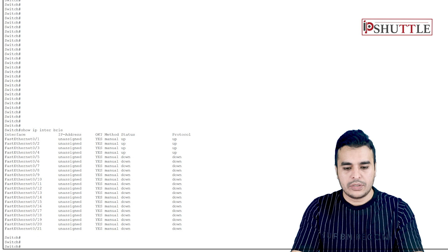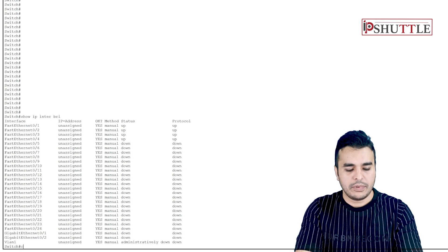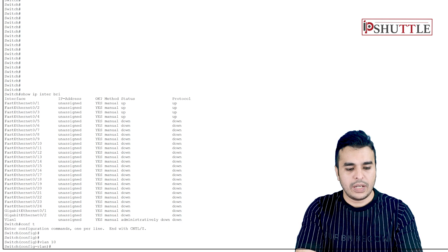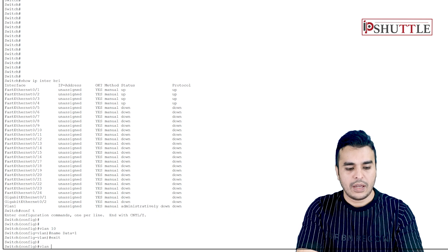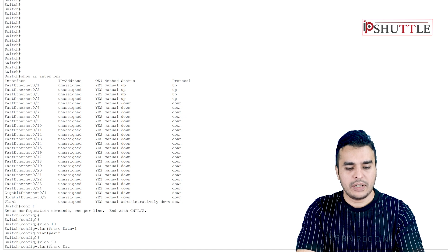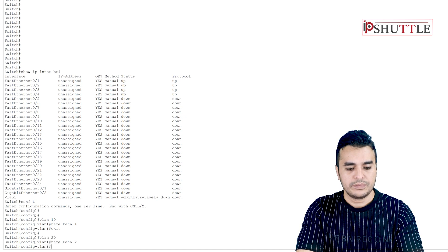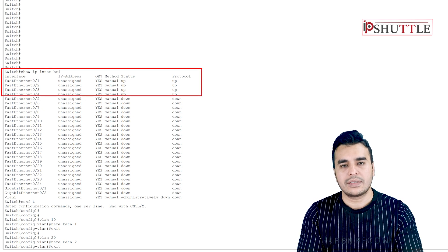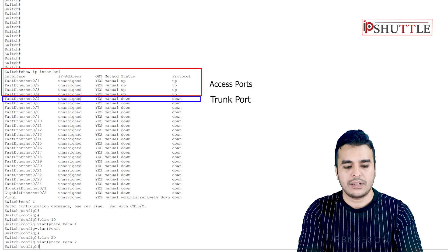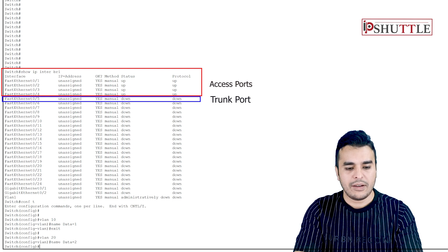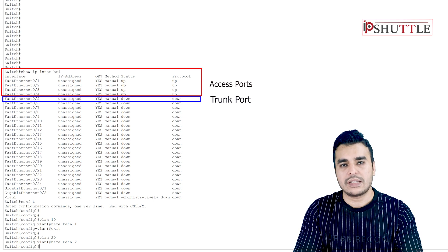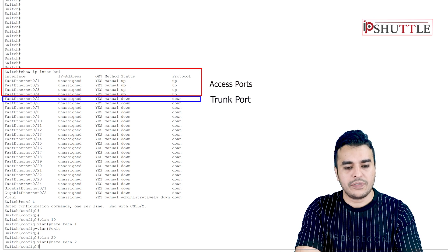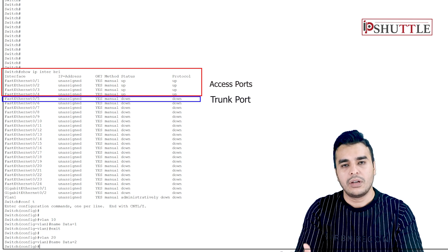Let's go to the switch, enter configure terminal, and configure two different VLANs: VLAN 10 — name it data 1 — and VLAN 20 — name it data 2. We will configure all interfaces as access ports except the router interface. Running show IP interface brief we have four interfaces up, and the fifth interface is down — we haven't configured the router yet.